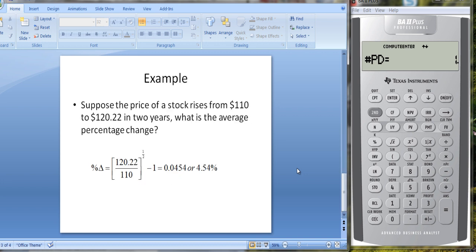Let's take a look at an example. In this example, we use the same prices, but suppose it took two years for the price to rise. So the price in year two is